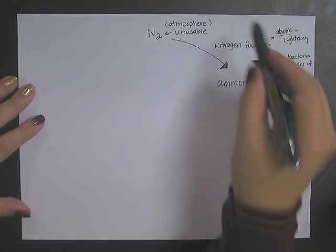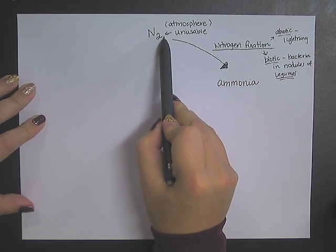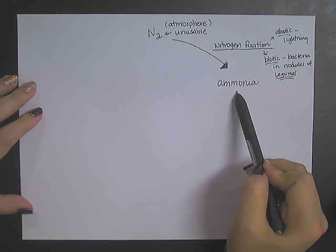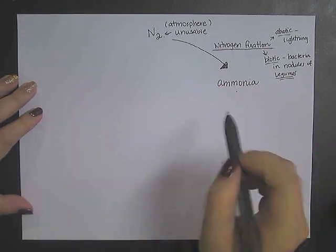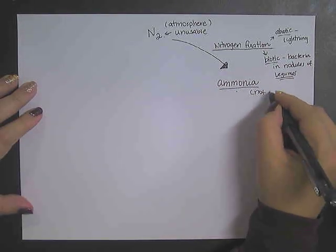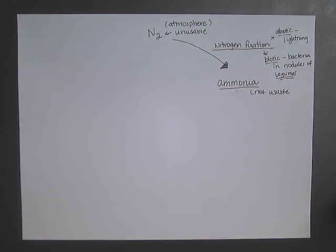So nitrogen fixation is the process by which atmospheric nitrogen, which is unusable, is now in a liquid form. However, what you guys do need to know is that this is still not usable by plants. This ammonia is actually toxic.